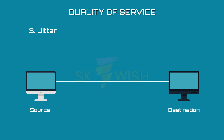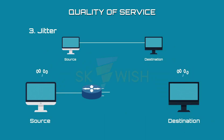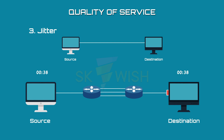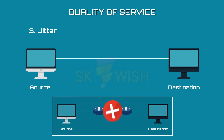Jitter is the variation in delay for packets belonging to the same receiver. For example, if three packets depart at times 1, 2, 3 and arrive at 31, 32, 33, all have the same delay of 30 units. On the other hand, if those packets arrive at 33, 31, and 38, they will have different delays. For audio and video transmission, the first case is completely acceptable, but the second case is not.